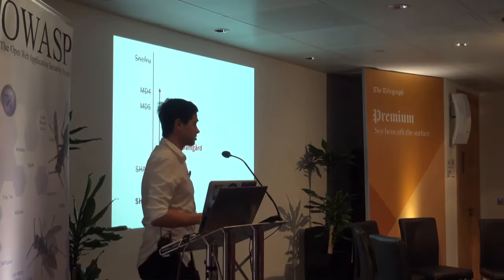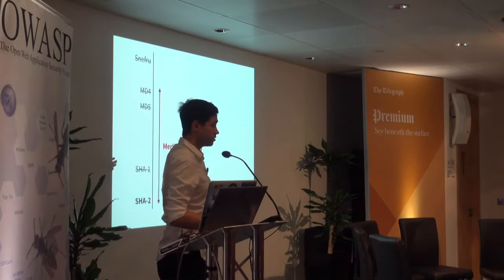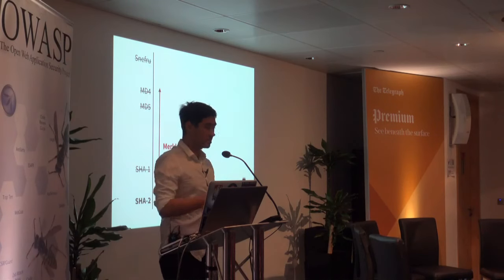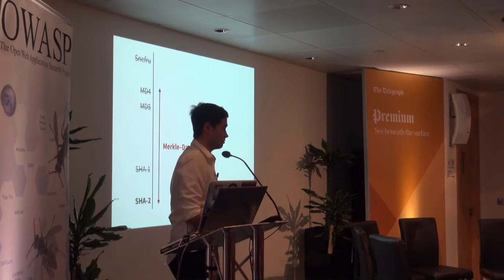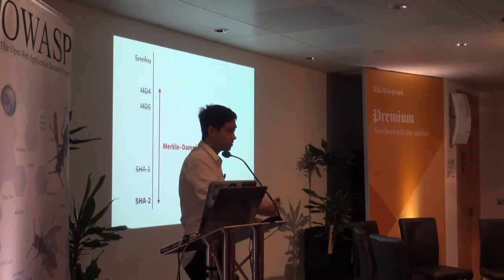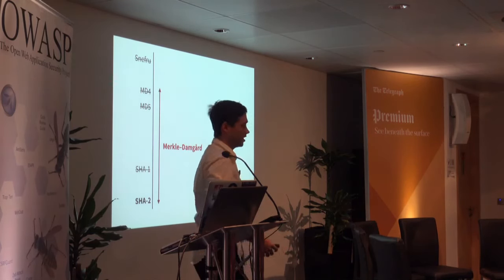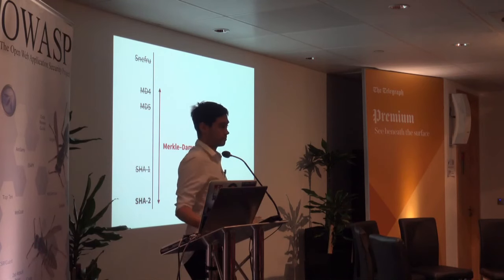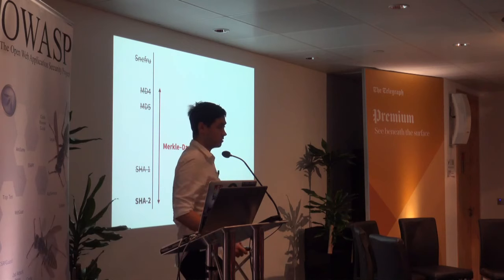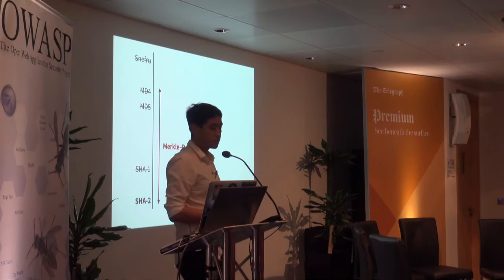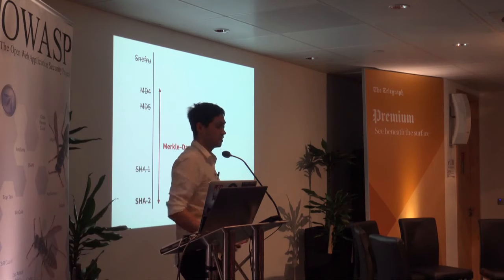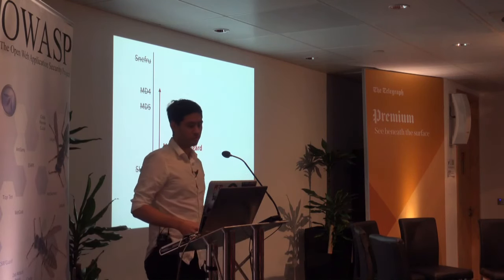SHA-2 is built on top of the same construction, Merkle-Damgård. It's the standard nowadays — wherever you are in the spectrum of security, you must have heard of SHA-2 or used it. The question is: is it going to follow the same fate? Is it going to get broken one day? And if so, do we have another standard to replace it — a backup plan? The answer was not very clear.